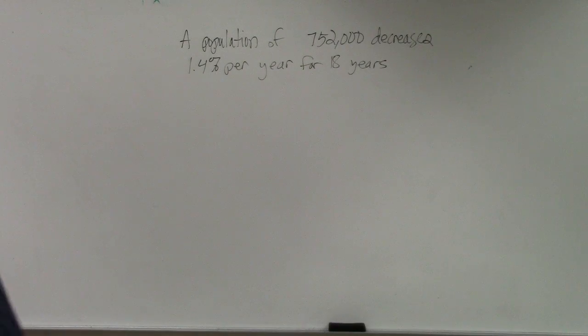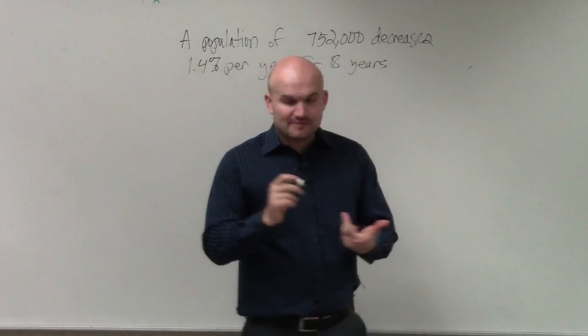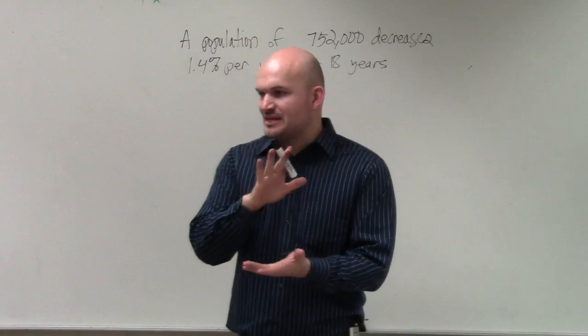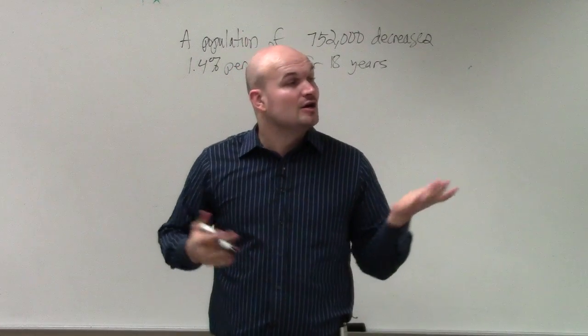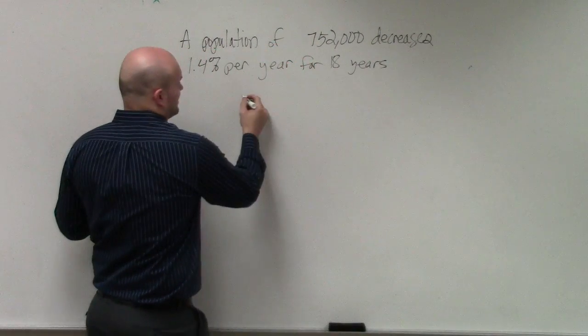It says a population of 752,000 decreases 1.4% per year for 18 years. If you guys remember when we first did this, I basically provided you with two formulas: first was our exponential form, the next one was our modeling equation.